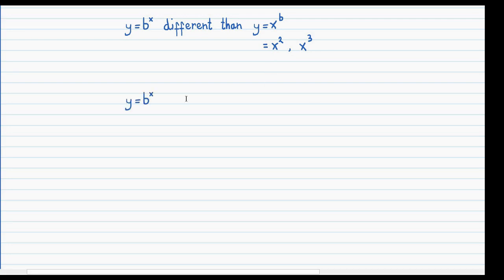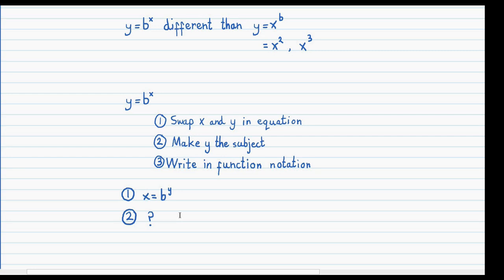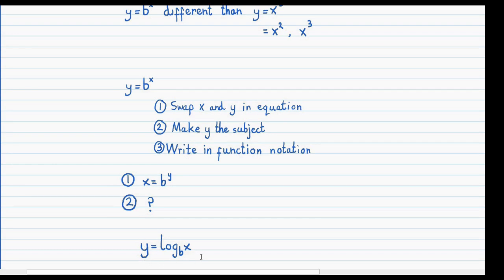So we know what an exponential function is, but how do we determine its inverse? We follow the usual three steps. First, swap x and y in the equation, which gives x equals b to the power of y. Next, we need to make y the subject — and this is where logarithms come in. Logarithms allow you to make the exponent the subject of the equation, and when we convert to logarithm form, we get y as the subject. If you haven't already, pause the video and watch the logarithms video, which fully explains how they work.